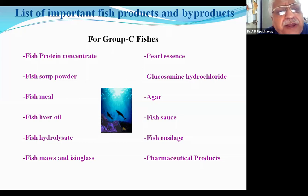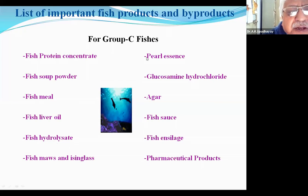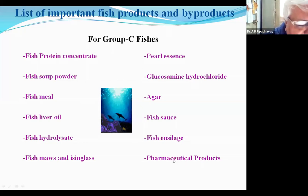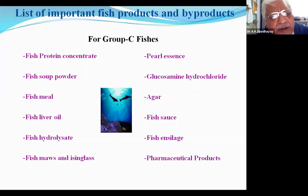The byproducts you may know include fish protein concentrate, fish soup powder, fish meal, fish liver oil, fish hydrolysate, fish moss, pearl essence, glucosamine, agar, fish sauce, pharmaceutical products, and especially chitin and chitosan. These products have come in a major way — about 300 derivatives of very exclusive products can be derived from chitin and chitosan, and it is coming up very fast, being rendered from the chitin of shrimp.